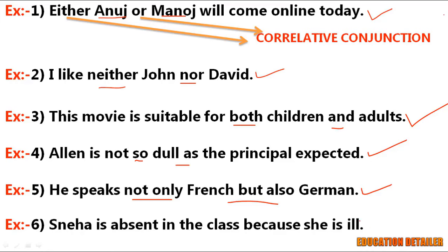In the last example: 'Sneha is absent in class because she is ill.' The conjunction is 'because' and it is a subordinating conjunction. Well, that's all for this session. Please make sure to subscribe and press the bell icon to get notifications of my latest videos. Keep practicing and improve your English skills. Thank you so much for joining me — I will see you very soon in my next lesson.